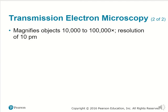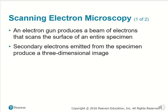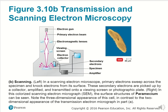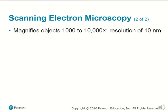Essentially, one picometer is 10 to the negative 15 meters — a very small section of a meter. Scanning electron microscopes involve an electron gun that produces a beam of electrons that will scan the surface of an entire specimen. Secondary electrons emitted from the specimen are then used to produce a three-dimensional image. Beams of electrons are shot into a sample and secondary electrons are interpreted by electron collectors and receptors. This achieves very good resolution, easily into the nanometer scale.